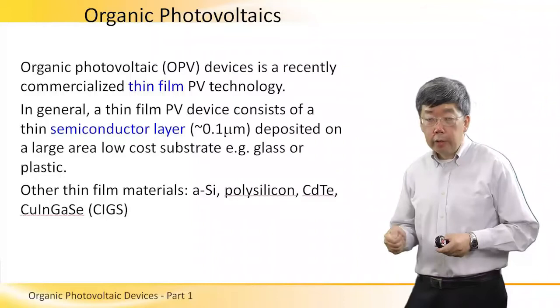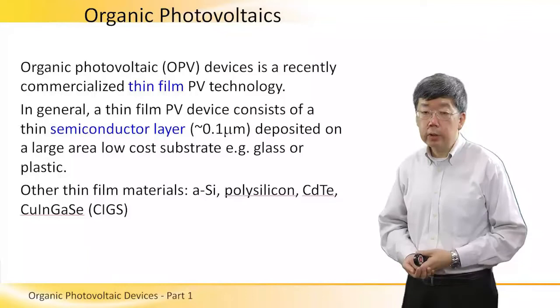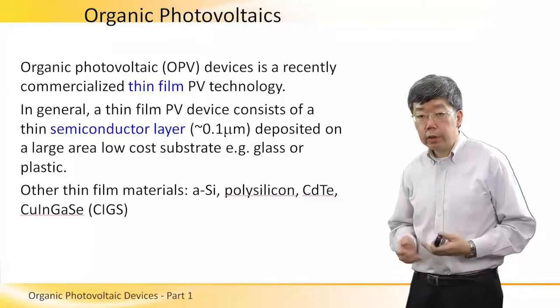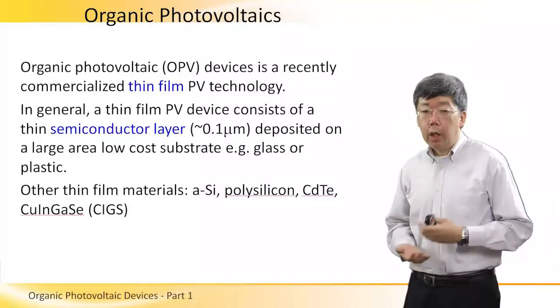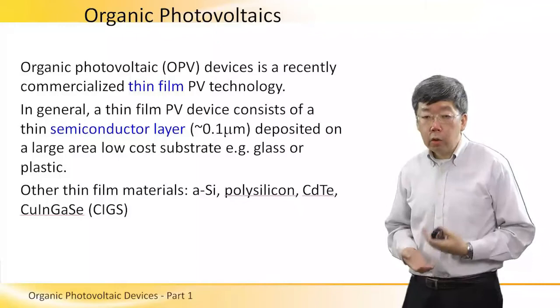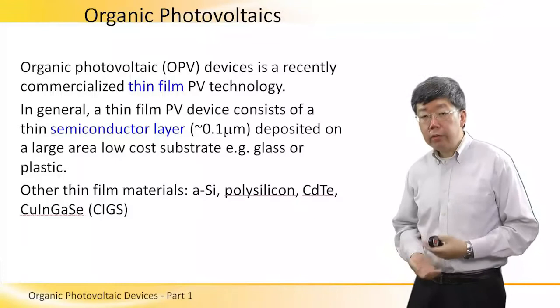The thin-film materials which are also used for making PV devices include amorphous silicon, usually written as a-silicon, polysilicon, cadmium telluride, and CIGS. CIGS is a so-called chalcogenide semiconductor consisting of copper, indium, gallium, and selenium. But in this tutorial we will only focus on organic PV devices and materials.